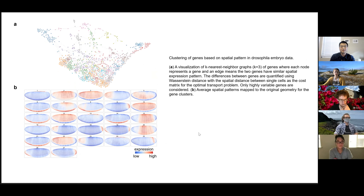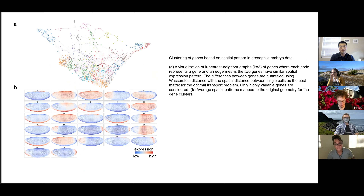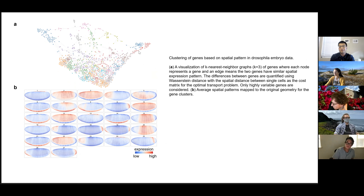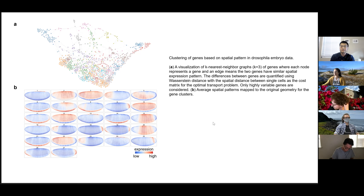We can use optimal transport a third time to quantify the difference between spatial expression patterns of genes. For the Drosophila embryo example, each node is a gene and two connected nodes means they have a similar spatial gene expression pattern as measured by optimal transport. With that gene-by-gene similarity measurement, we can cluster the genes and find representative spatial patterns of each gene cluster. That's the basic analysis we can do with optimal transport applied to a pair of spatial and single-cell datasets.